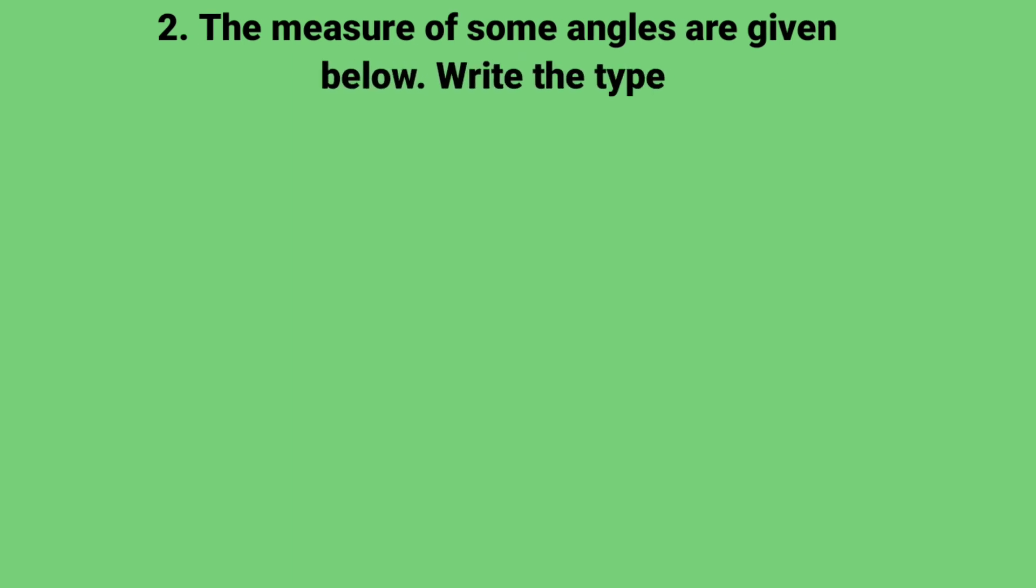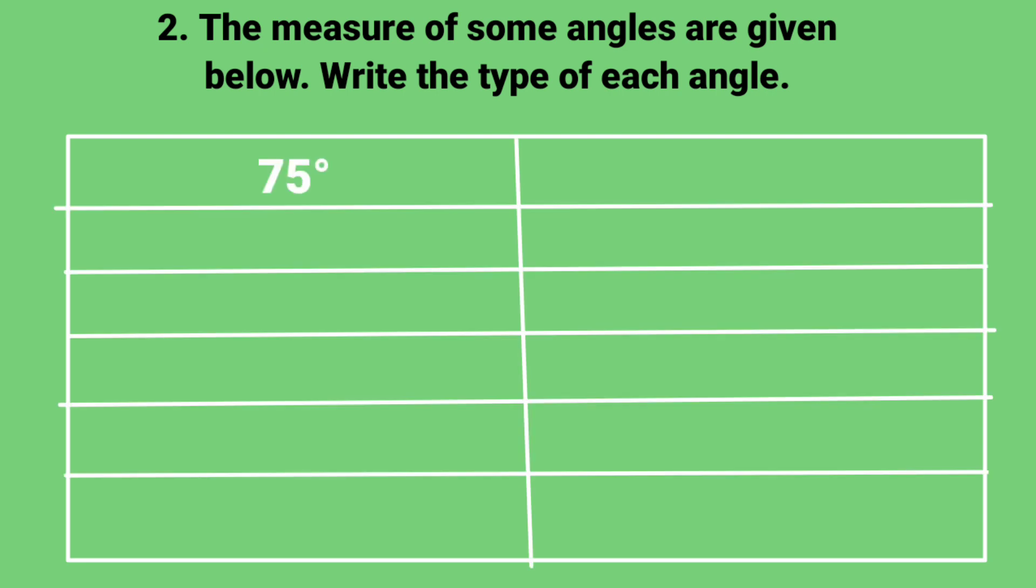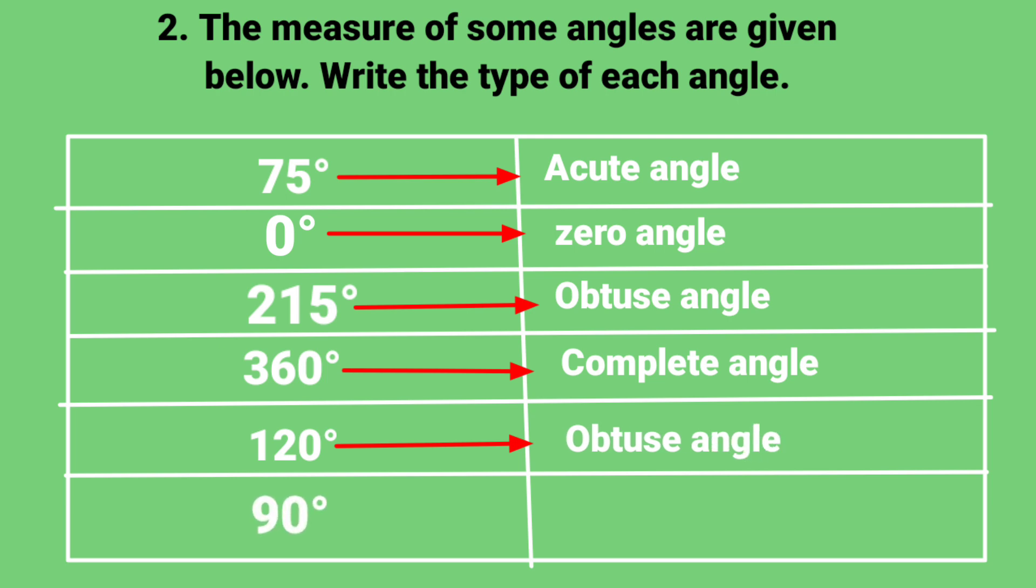The measure of some angles are given below. Write the type of each angle. 75 degrees, the answer is acute angle. Zero degrees, the angle is zero angle. 360 degrees, it is complete angle. 120 degrees, it is obtuse angle. And 90 degrees, it is right angle.